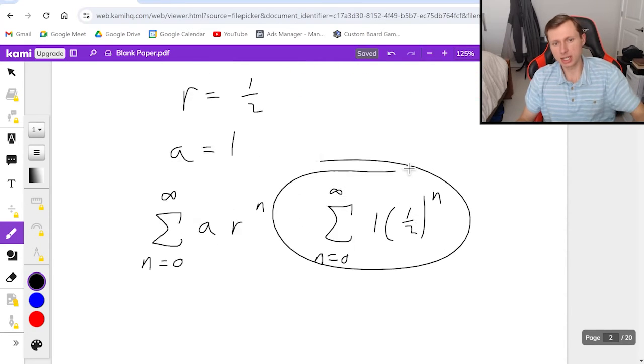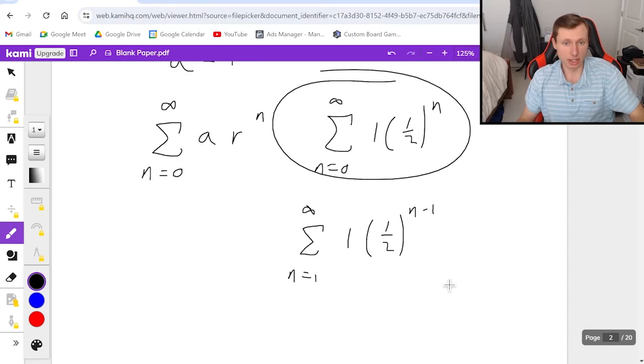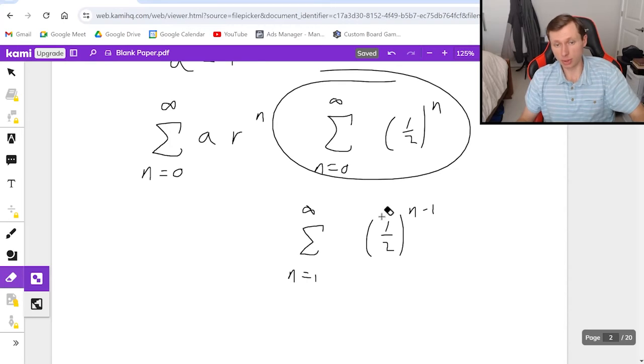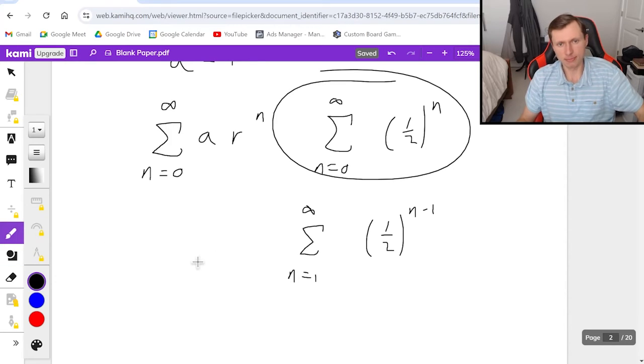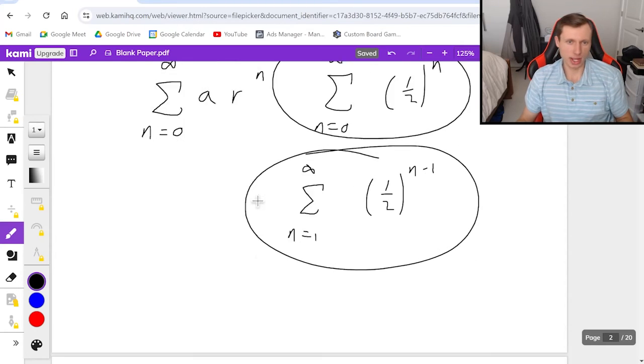You can also do this in the n equals one starting position. If you want to do that instead, the series would look like this, just with an n minus one in the exponent. And honestly, I don't even have to write the one here for either case, because it's not important. And so either of these are right. I don't care. Your professor or teacher will accept both. So that's all I have to say about that.